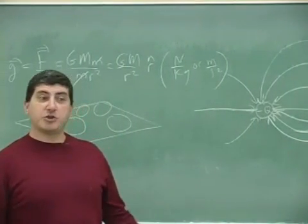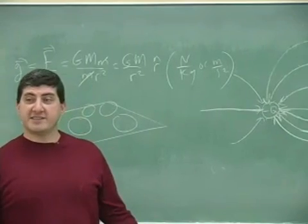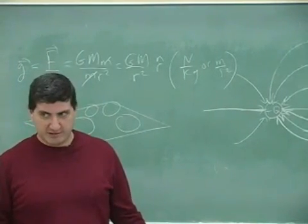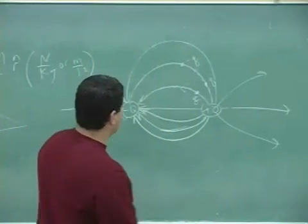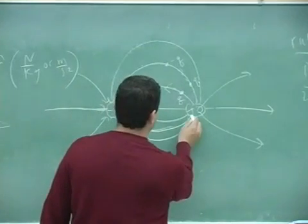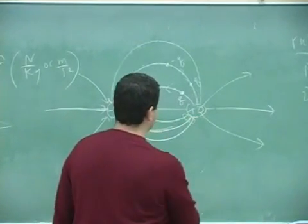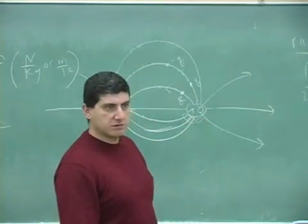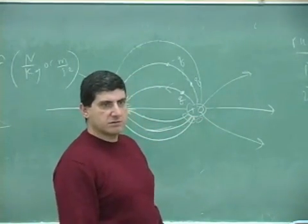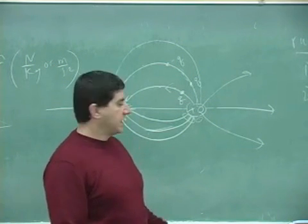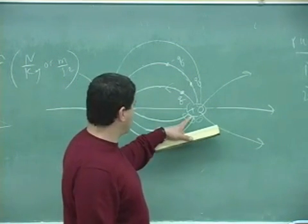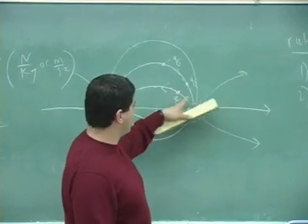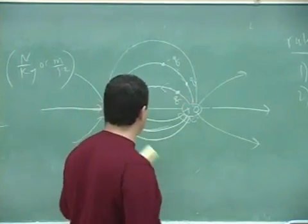It still obeys rule one, but it's wrong — it's not symmetric. The field strength is concentrated here but weak over here. It shouldn't be more concentrated on one side than the other; it should be similar to the top over here.